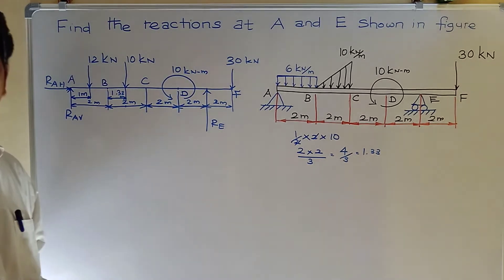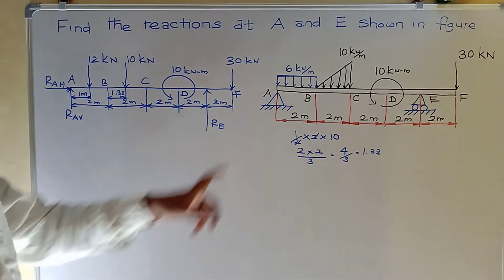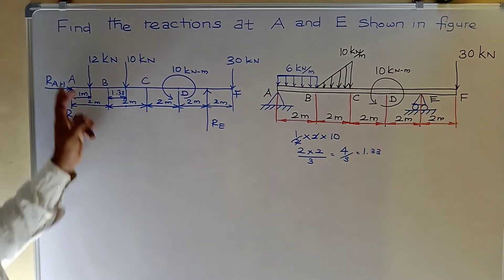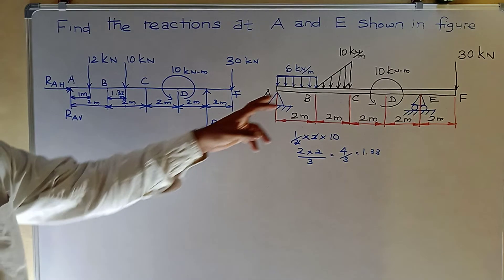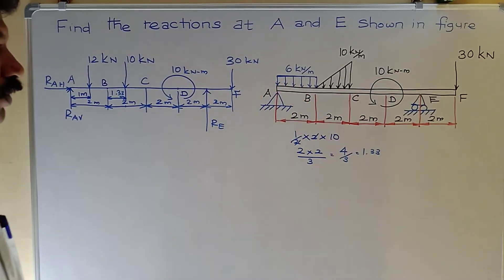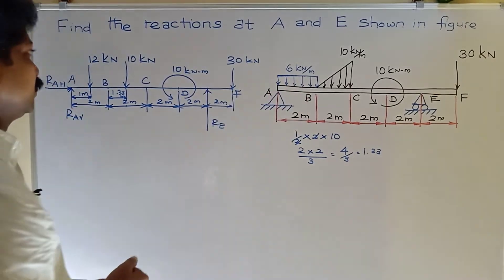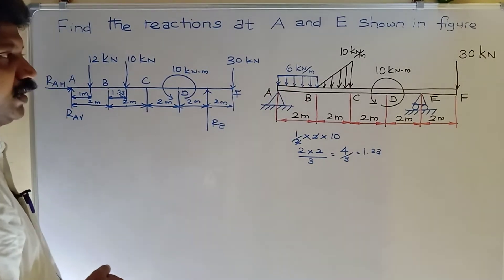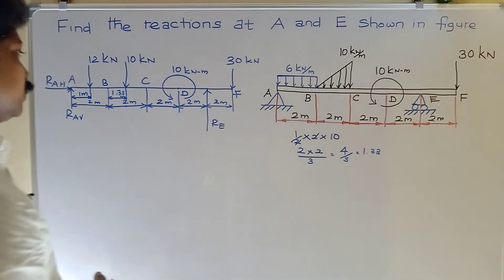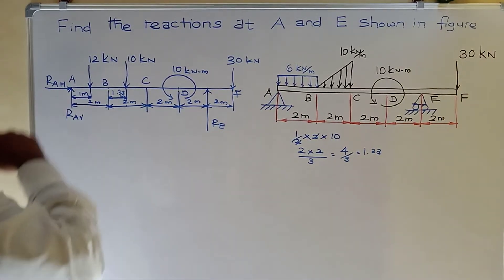To recap the free body diagram: the hinge support offers two reactions — one vertical and one horizontal. Converting UDL to point load gives load times total distance = 12 kN, positioned at total distance divided by 2 = 1 meter from point A. So 12 kN acts at 1 meter from A.